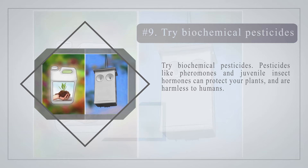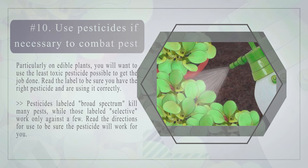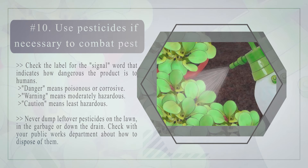Number nine: try biochemical pesticides. Pesticides like pheromones and juvenile insect hormones can protect your plants and are harmless to humans. Use pesticides if necessary — particularly on edible plants, you will want to use the least toxic pesticide possible. Read the label to confirm you have the right pesticide and are using it correctly. Pesticides labeled broad spectrum kill many pests, while those labeled selective work only against a few. Check the label for the signal word: danger means poisonous or corrosive, warning means moderately hazardous, and caution means least hazardous. Never dump leftover pesticides on the lawn, in the garbage, or down the drain — check with your public works department about how to dispose of them.